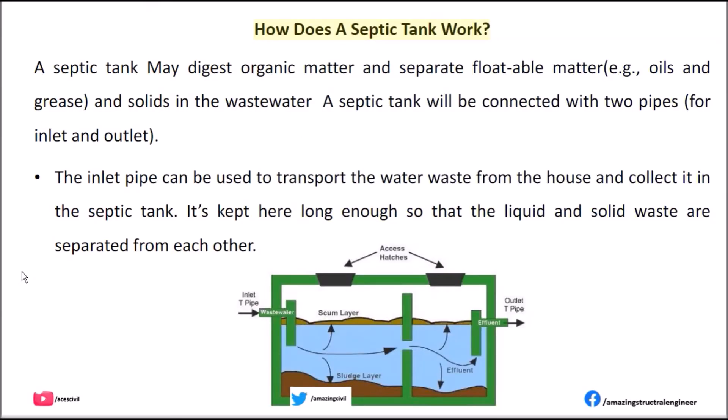How does a septic tank work? A septic tank may digest organic matter and separate floatable matter, e.g. oils and grease, and solids in the wastewater. A septic tank will be connected with two pipes for inlet and outlet. The inlet pipe is used to transport the water waste from the house and collect it in the septic tank. It's kept here long enough so that the liquid and solid waste are separated from each other.